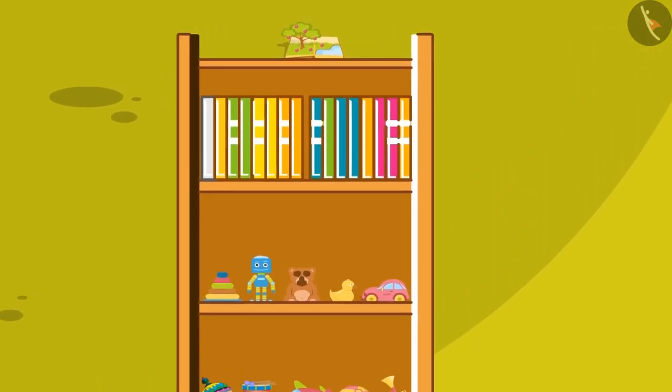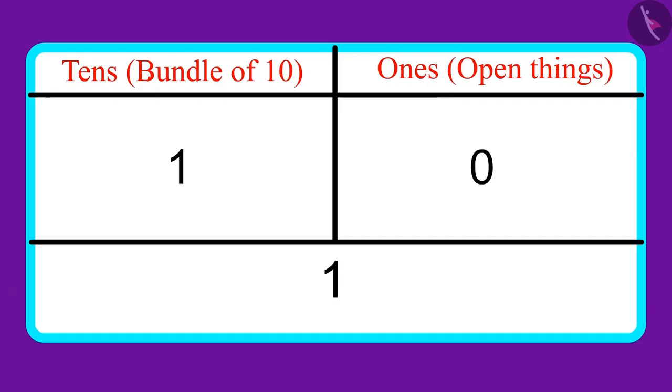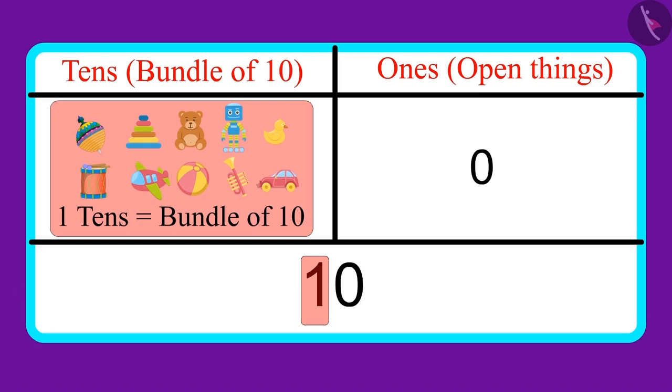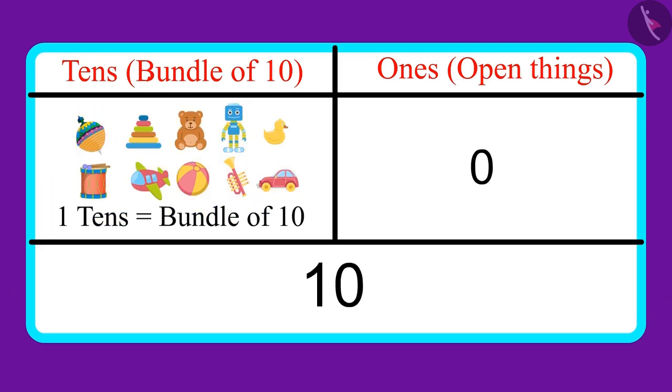No Auntie, it doesn't mean one. One tens means a bundle of ten. That means I have ten toys. Did you understand? Oh yes! So children, that means one ten and zero ones make ten.